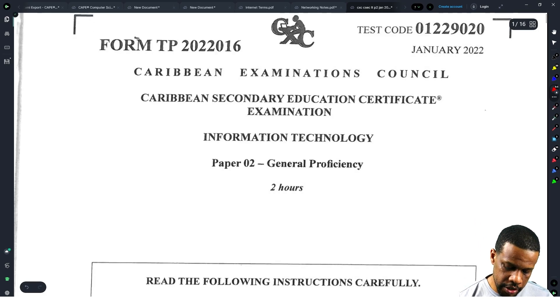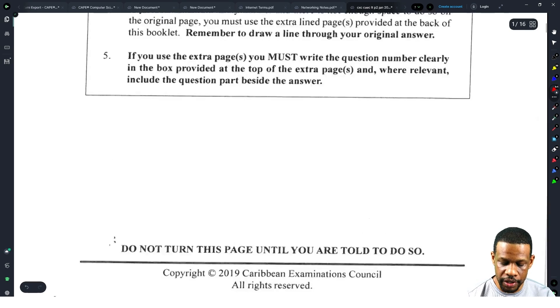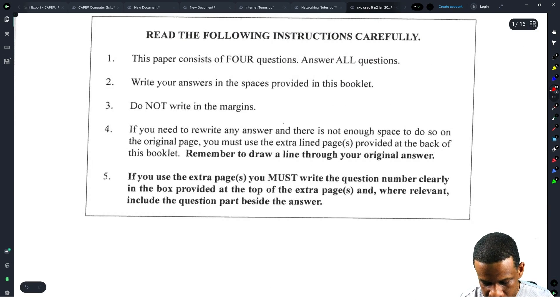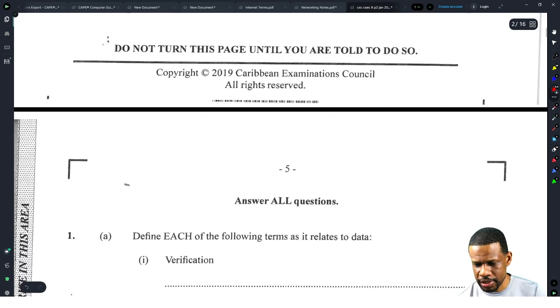This is the January 2022 CSEC Information Technology Paper 2. It's supposed to take us two hours. I am fully confident that I might be able to get this done in our way. I haven't watched this paper before in any great detail because I didn't have time. I kind of perused it and I was like, oh this is easy.